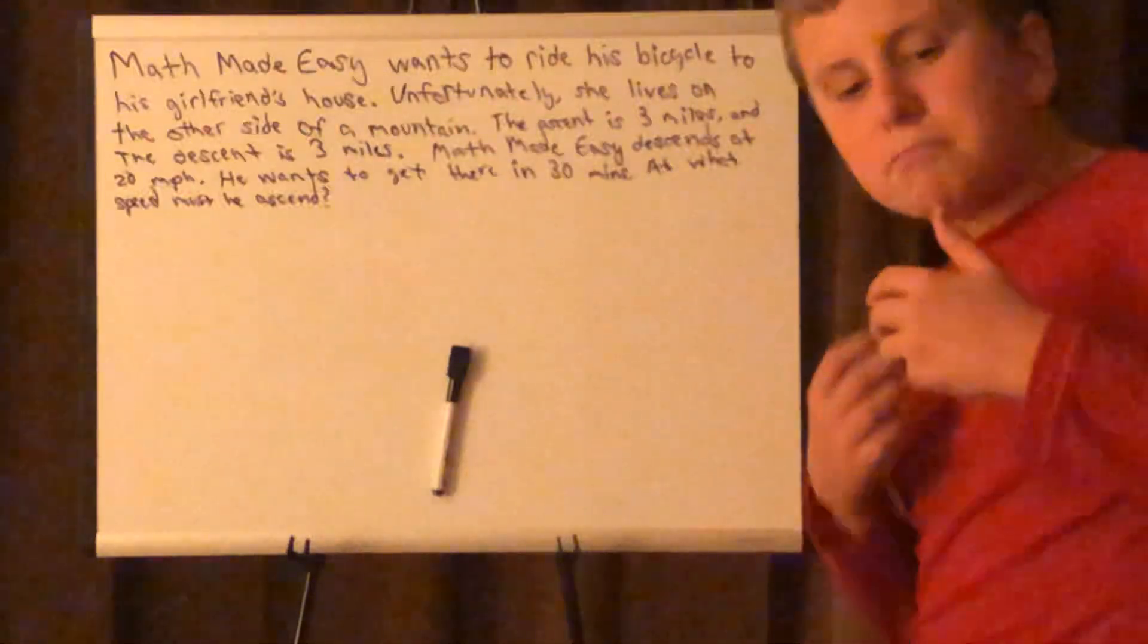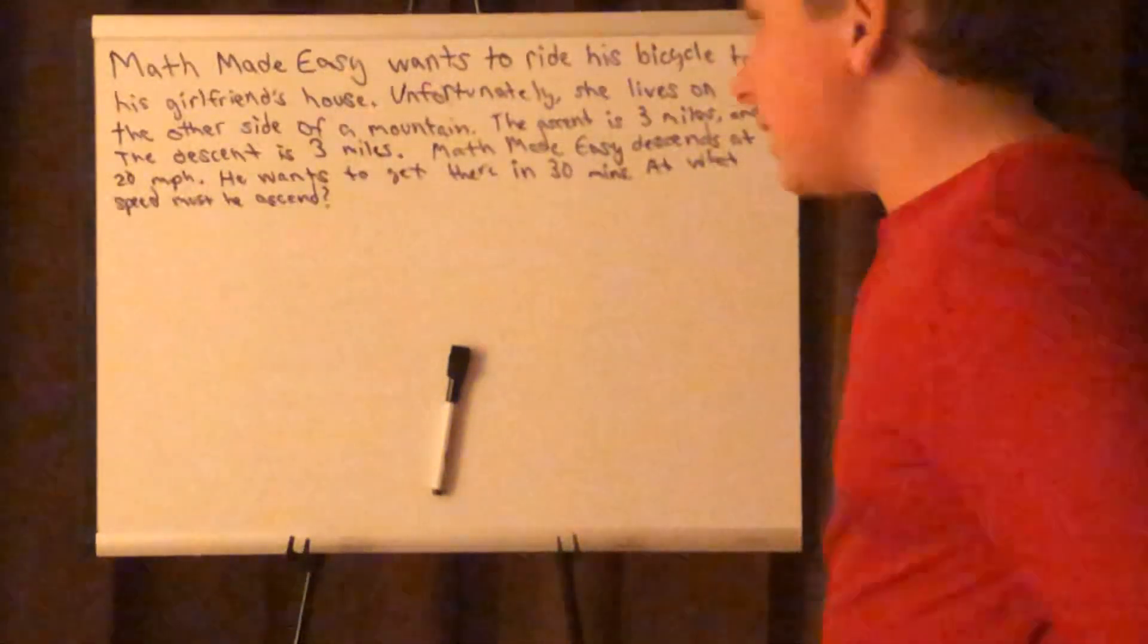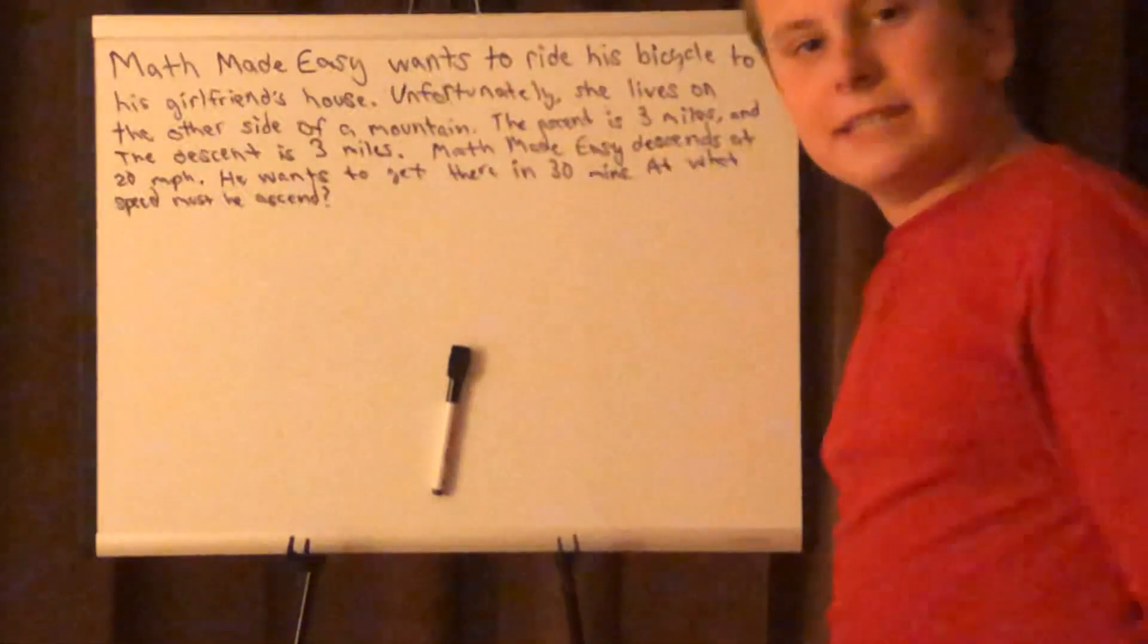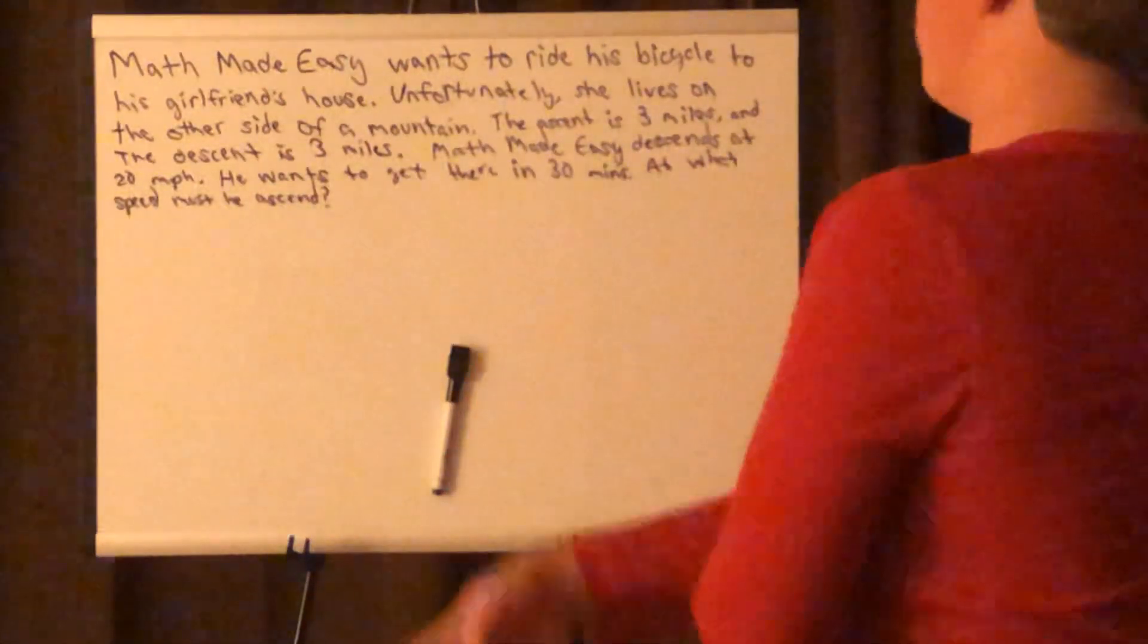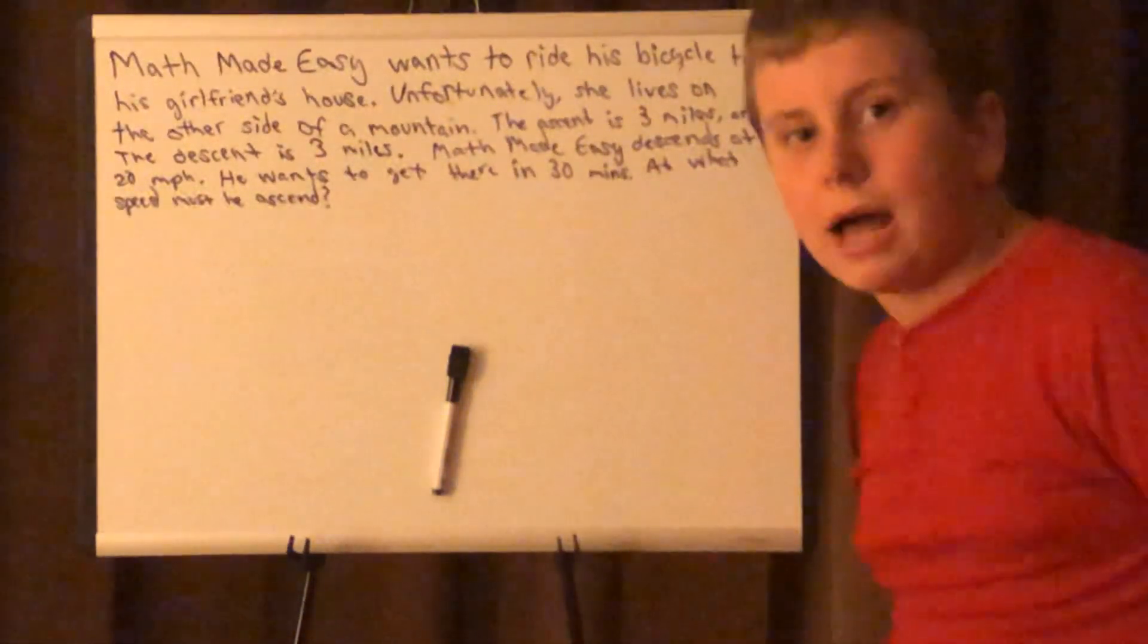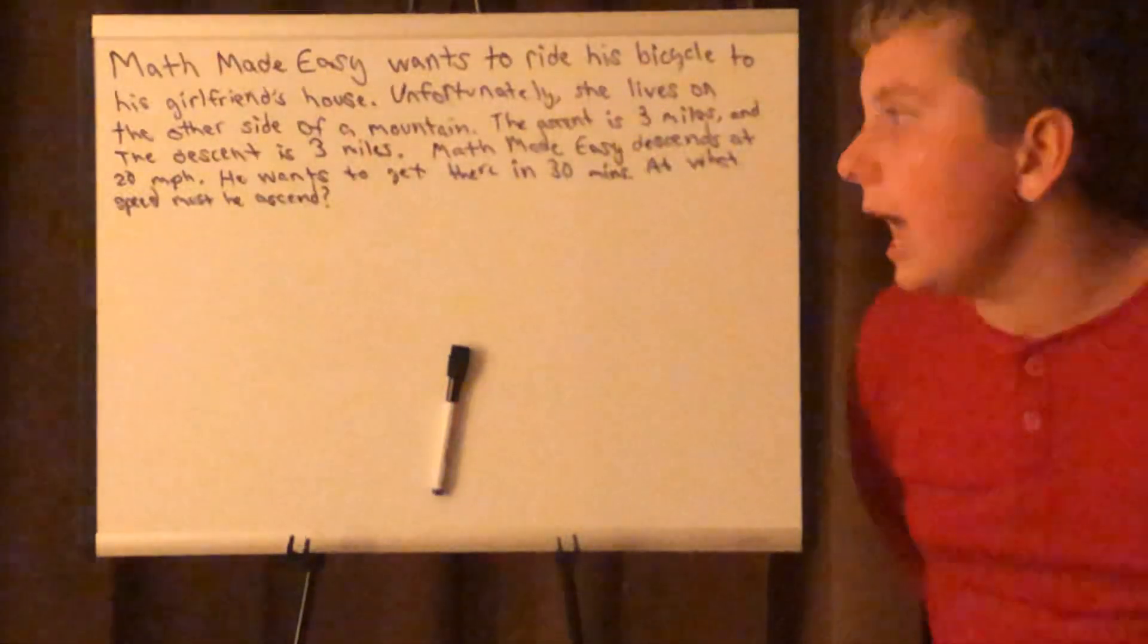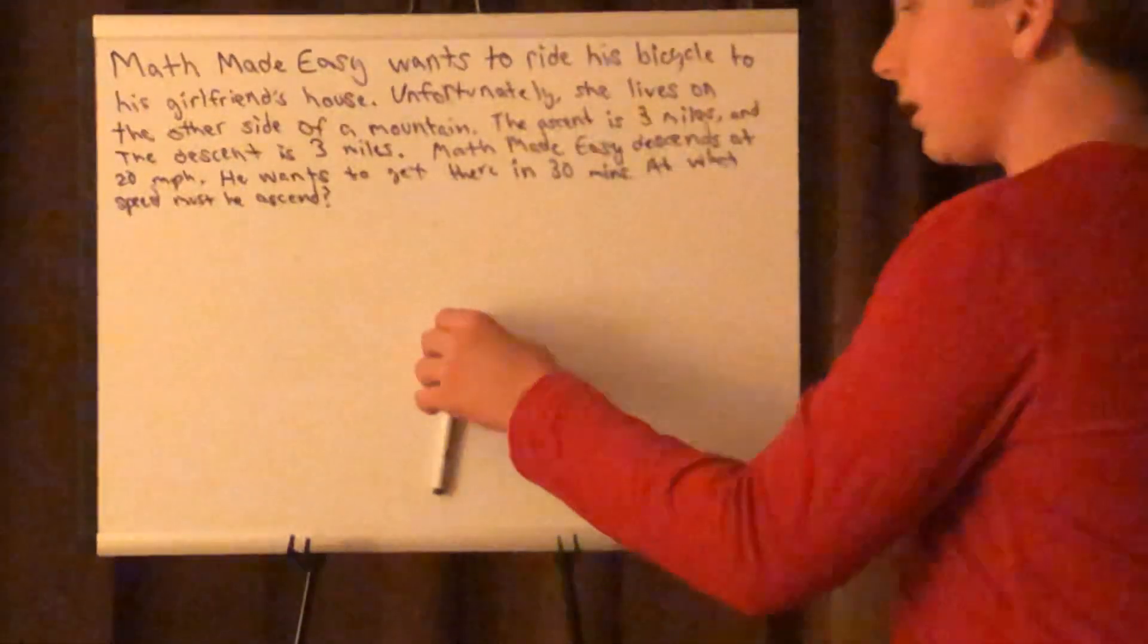I live in a pretty mountainous area of the United States, so this does happen to me sometimes. The ascent is three miles and the descent is another three miles, so six miles total. Math Made Easy descends at 20 miles per hour. He wants to get there in 30 minutes. At what speed must he ascend?